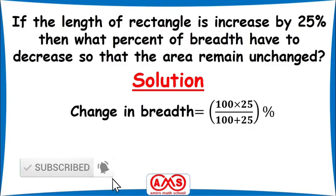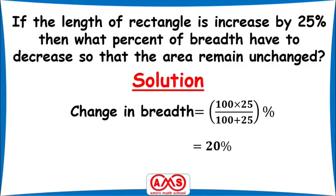After calculation we get the value 20%. So if the length of the rectangle is increased by 25% and the breadth is decreased by 20%, in that case the area will remain unchanged. We can solve this using variables, but to get the result in a short time we can use this formula.